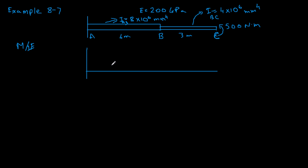In this video we have example 8-7, which asks us to find the deflection at point B and at point C. First, I'm going to draw the elastic curve before the M/EI diagram, because it helps me visualize where compression and tension occur, which helps me create my moment EI diagram. It really simplifies things, so that's how I do it.